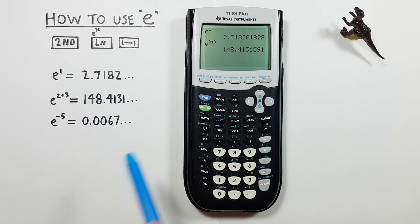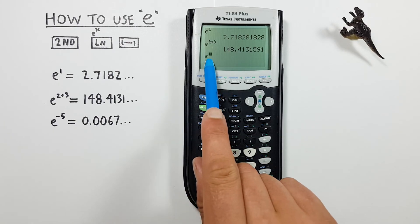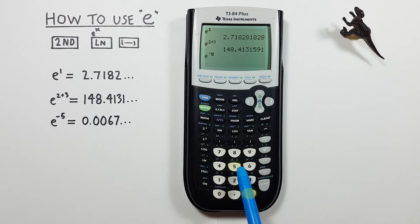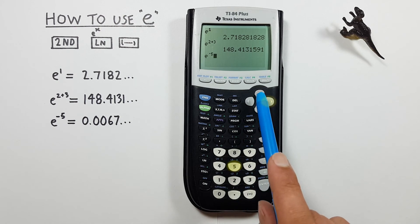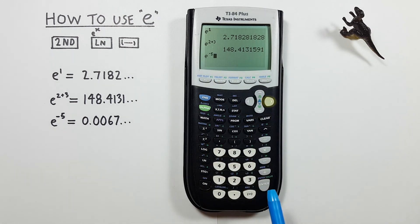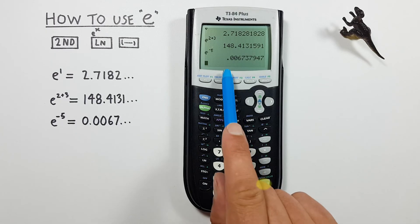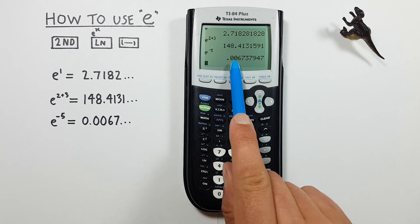To do this, again, second ln, and then in our exponent box we press negative 5. There we go, and press enter, and get a result of 0.0067 etc.